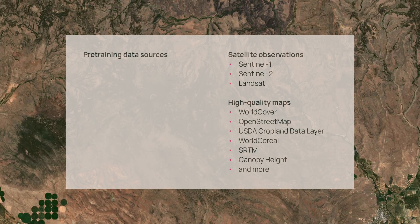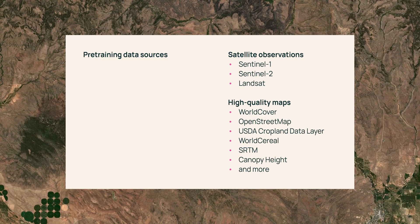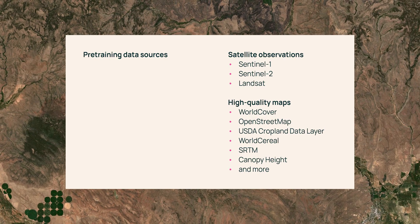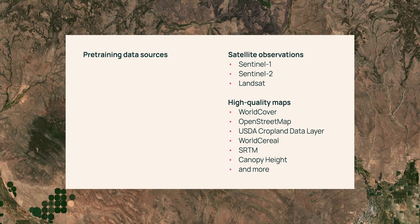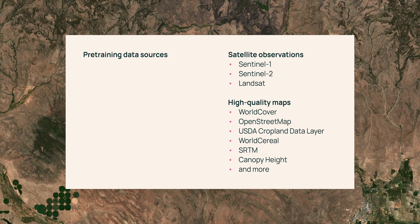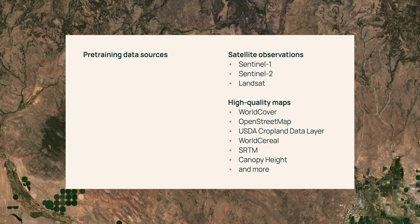For training the foundation model, we mainly use two sets. One is the satellite observations, which include Sentinel-2, Sentinel-1, and Landsat. The other set is high-quality maps like WorldCover, SRTM, OpenStreetMap, and other crop-type maps. We are trying to combine them into the model training process.